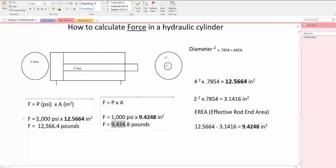If we increase the pressure on the cylinder and multiply it by the same area, that gives us 25,122.8 pounds. Higher pressure with the same area produces greater force.